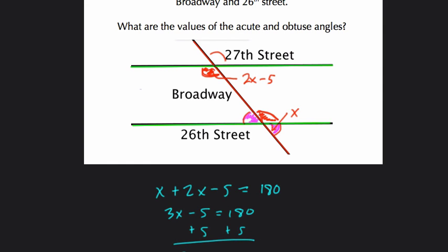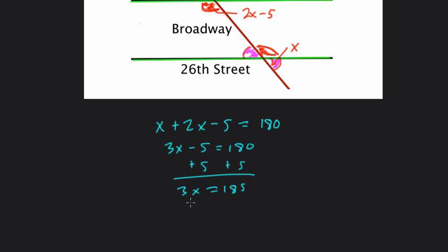And we get 3x equals 185. I know 3 goes into 18, so I know 3 goes into 180 60 times. So it goes into at least 60 times, but there's still 5 more to get here. We have 185.